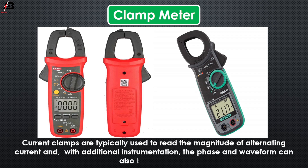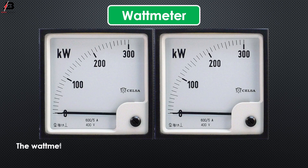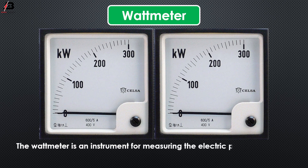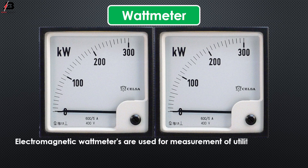Wattmeter: The wattmeter is an instrument for measuring the electric power in watts of any given circuit. Electromagnetic wattmeters are used for measurement of utility frequency and audio frequency power. Other types are required for radio frequency measurements.